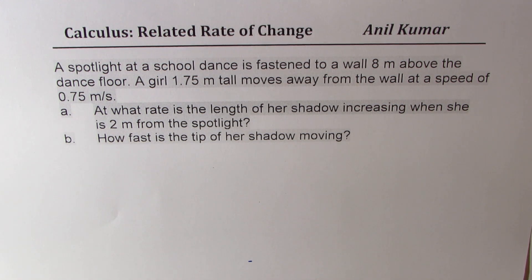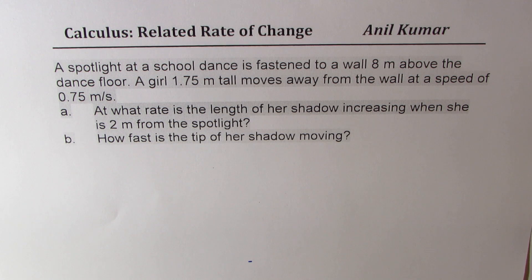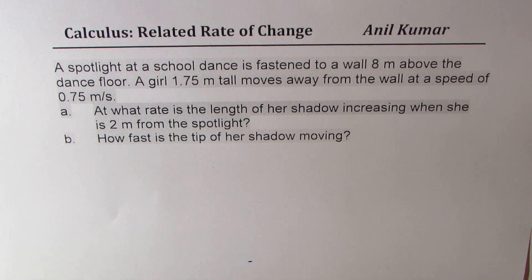The question is: a spotlight at a school dance is fastened to a wall 8 m above the dance floor. A girl 1.75 m tall moves away from the wall at a speed of 0.75 m per second. Part A: at what rate is the length of her shadow increasing when she is 2 m from the spotlight? Part B: how fast is the tip of the shadow moving?